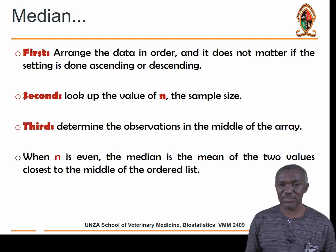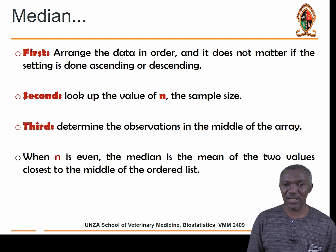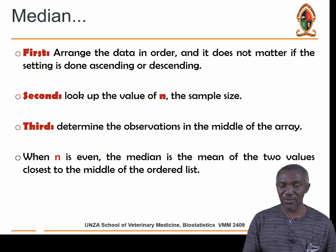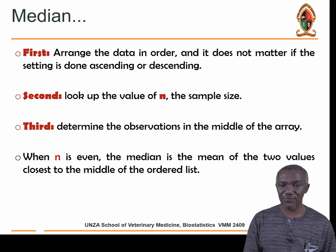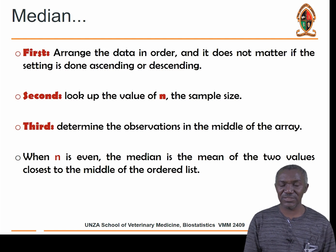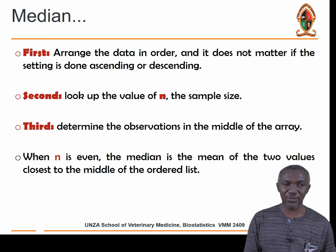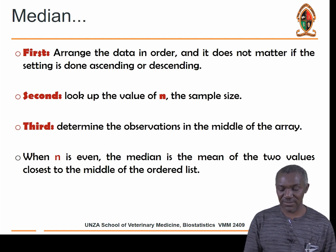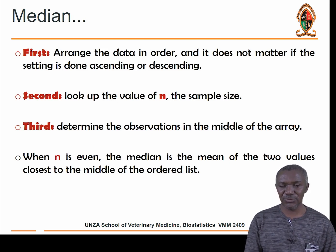If you have an uneven number of observations, say nine, life is easier. The middle is the number in the fifth position, because it separates four numbers on the left and four numbers on the right. For uneven numbers, it's straightforward to find the median without adding two central numbers.